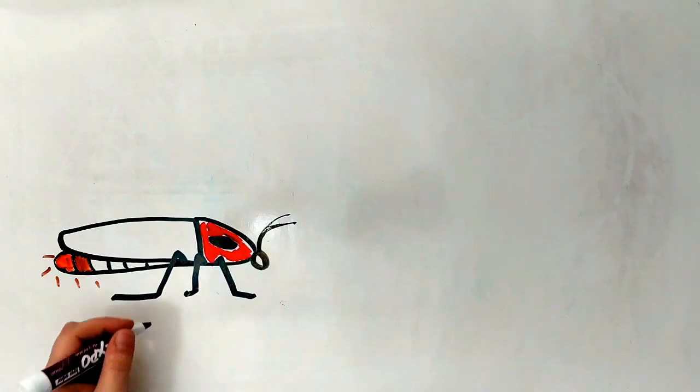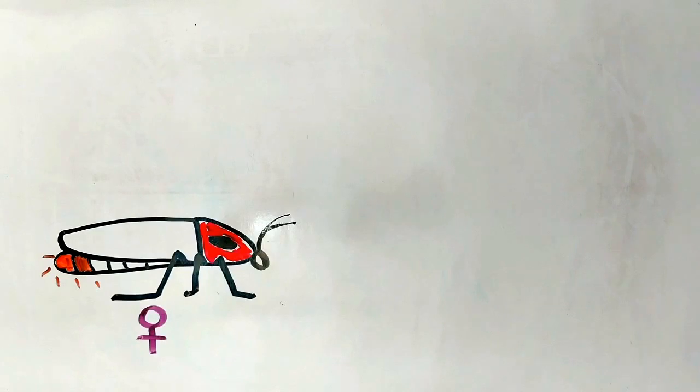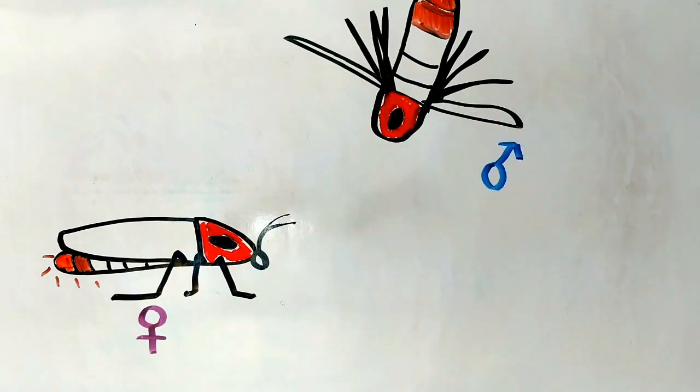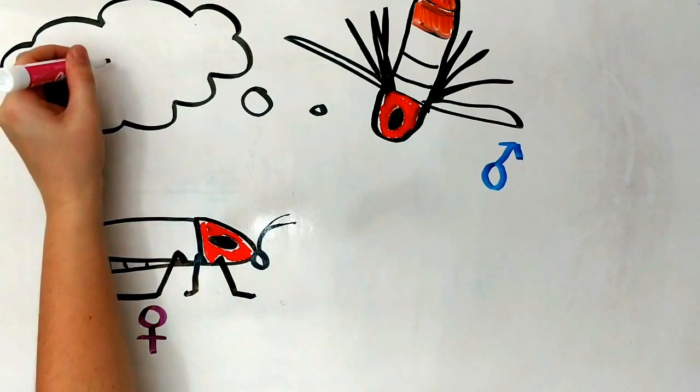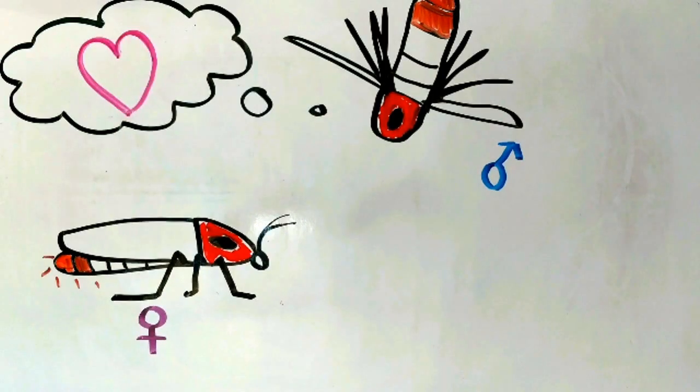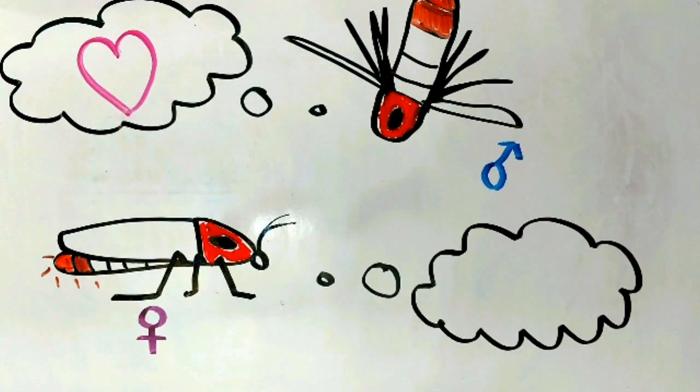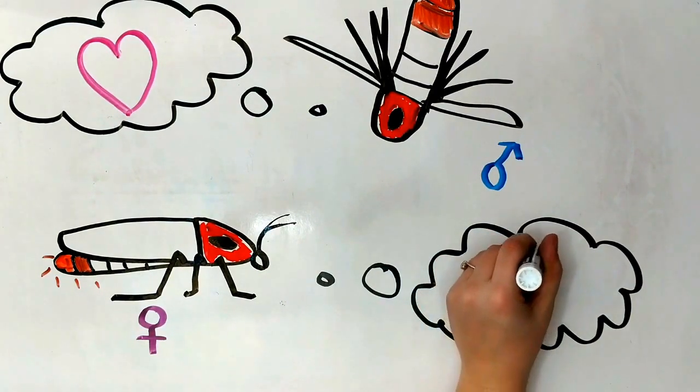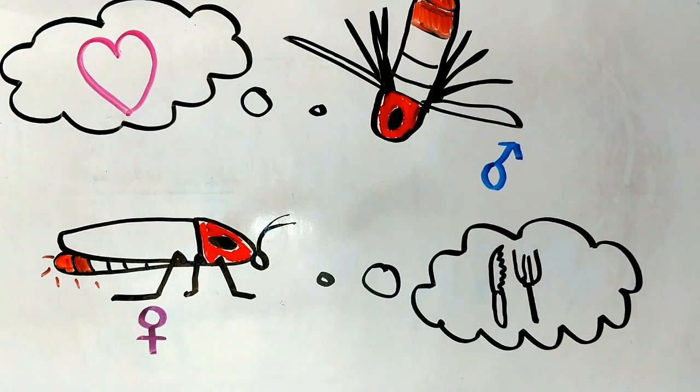But what happens when this attraction is taken advantage of? There are some female fireflies that will flash the light pattern of different species. She will attract the male down to her. He will be expecting to find a female to mate with, although she is waiting for him with an appetite. Like I said, fireflies are predatory. It is a buggy bug world out there.